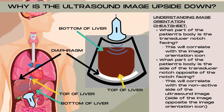Now that we've figured out the top and bottom of our image, we want to figure out the sides. Assuming standard image orientation with the image orientation marker in the top left corner of the image, we ask: what part of the patient's body is the transducer notch facing? In this case, we're in a standard transverse plane with the notch facing towards the patient's right side of the body, so the active side of the image corresponds with the patient's right. The side of the transducer opposite the notch — without the image orientation marker — is facing the patient's left side, making that the left side of the ultrasound image.